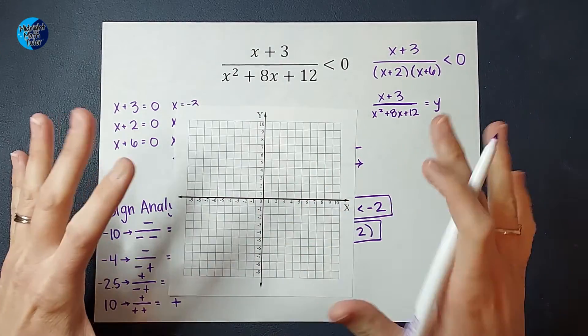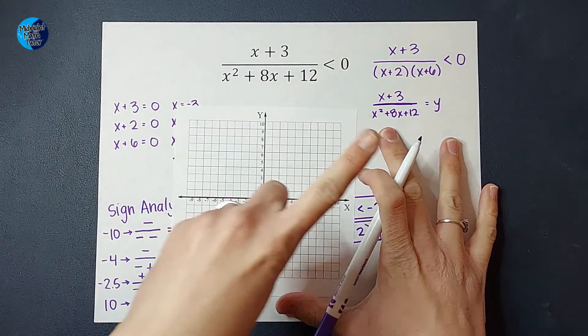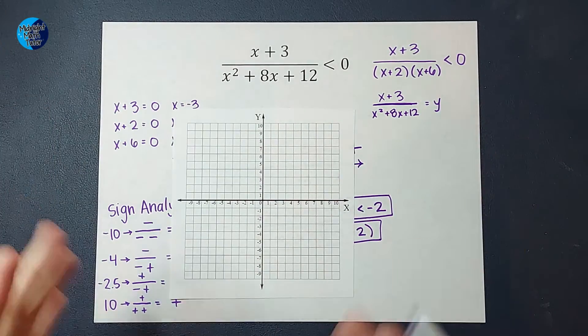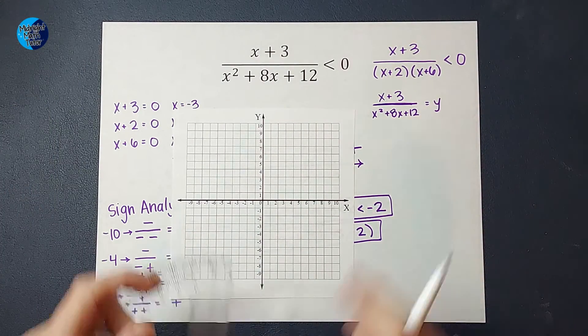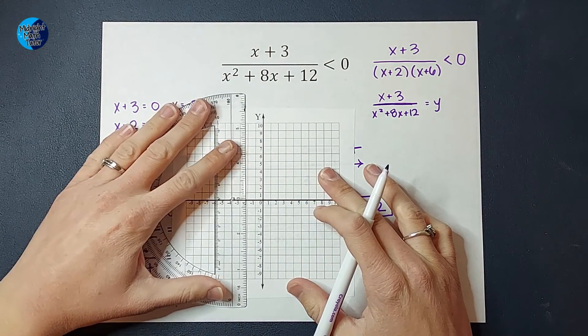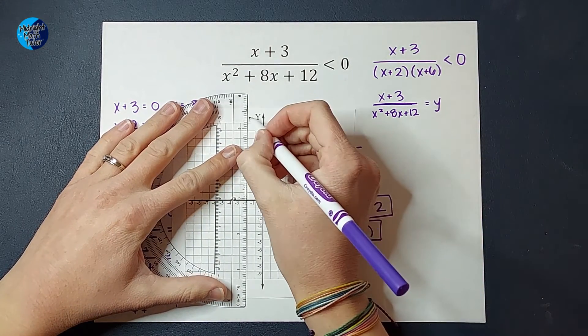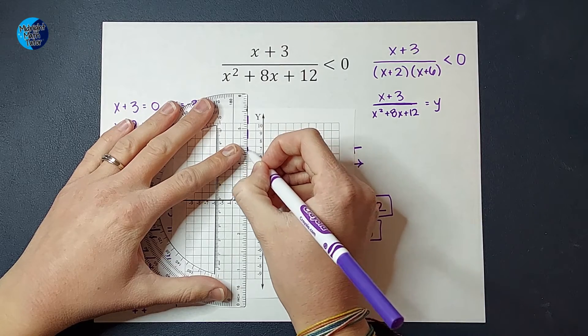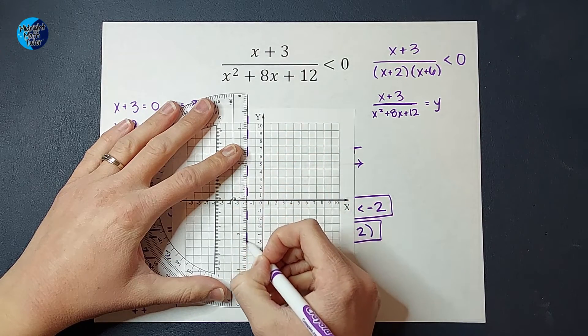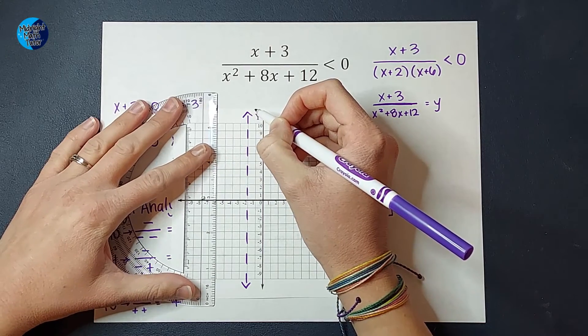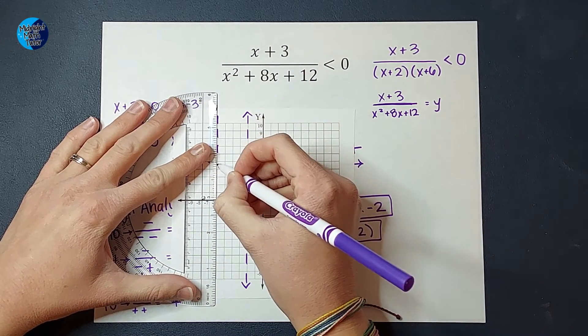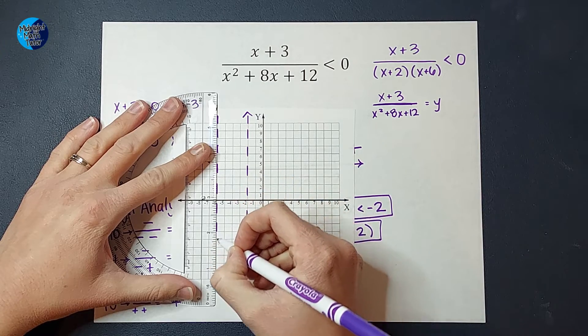Now, I'm not going to spend a lot of time explaining how to graph this because I actually have a video where I graphed this exact rational equation, so I'll link that in the corner for you. But I'm going to tell you quickly, if I were to graph this, I would figure out my vertical asymptotes by setting these equal to 0. So I'd figure out they are at negative 2 and pretend like I'm doing that really fast and negative 6. There we go. There are my vertical asymptotes.